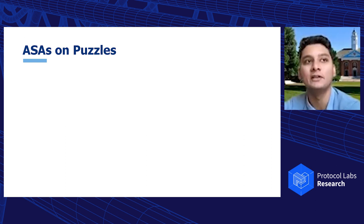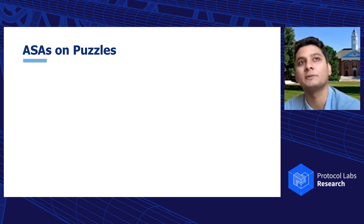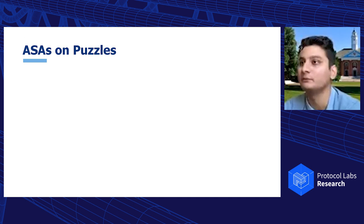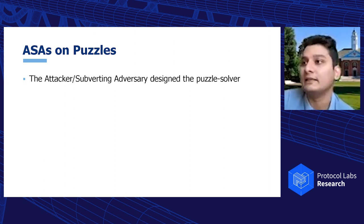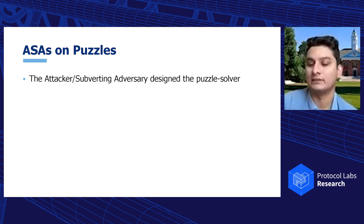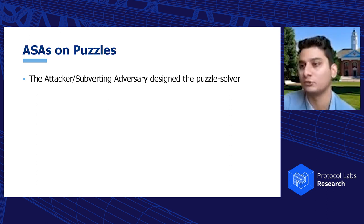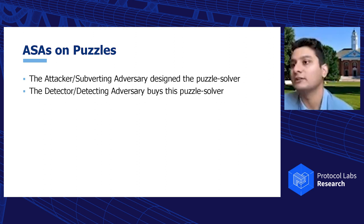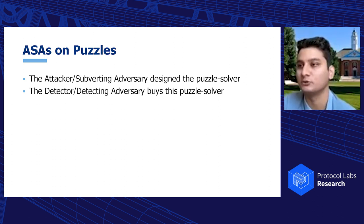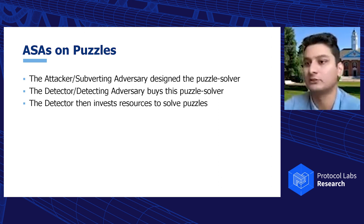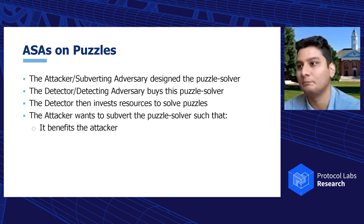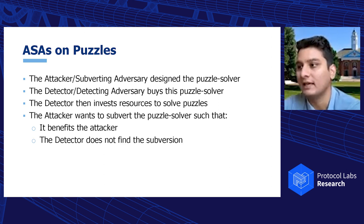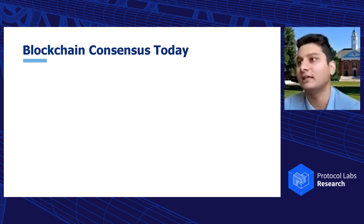Puzzles are different — it seems like there's no secret to leak. In encryption it's clear: if the adversary finds your message or secret key, the protocol breaks down. But how is this relevant to puzzles? In most puzzle protocols, the attacker or subverting adversary designs the puzzle-solving hardware or software. The honest party, called the detector, buys this puzzle-solving machine, invests resources to solve puzzles, and the attacker wants to subvert the solver to benefit themselves while the detector does not find the subversion.